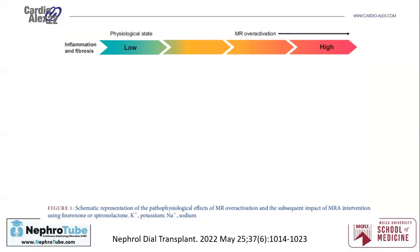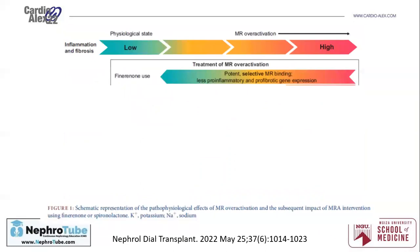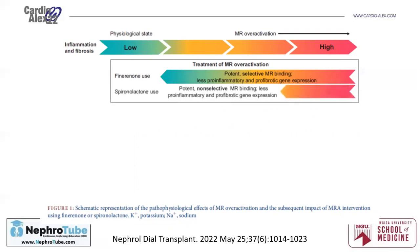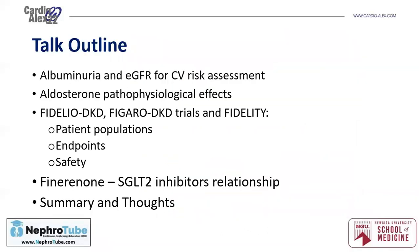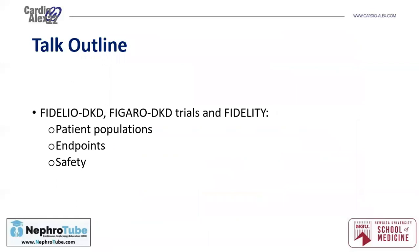I will now discuss finerenone, which is always put in comparison with spironolactone. Finerenone is a potent, selective mineralocorticoid receptor blocker with less pro-inflammatory and pro-fibrotic gene expression — that is an advantage over spironolactone, which is also potent but non-selective. The risk of hyperkalemia and gynecomastia is greater with spironolactone than with finerenone, because finerenone is a selective mineralocorticoid receptor binder.